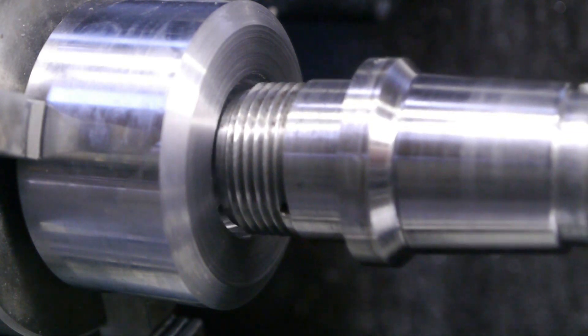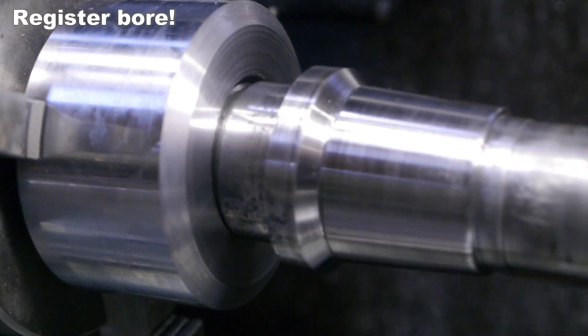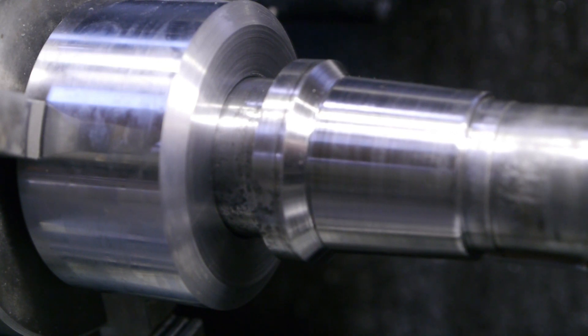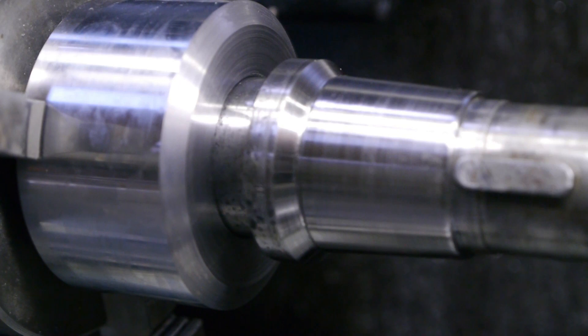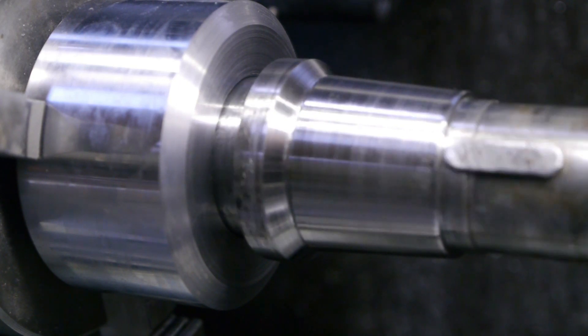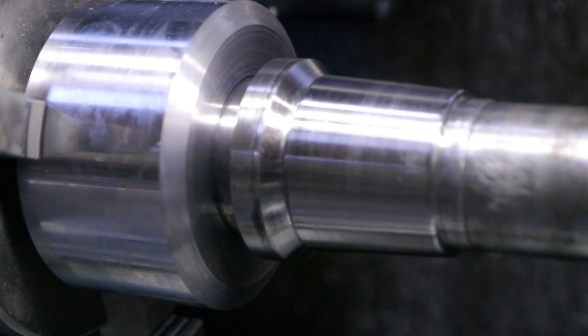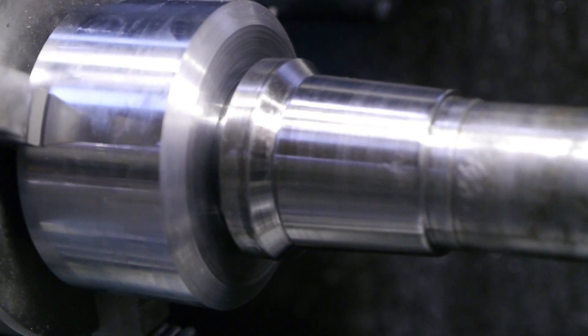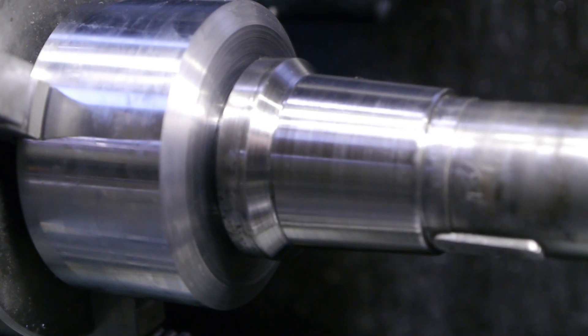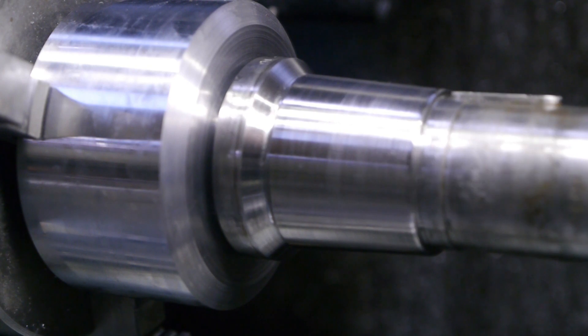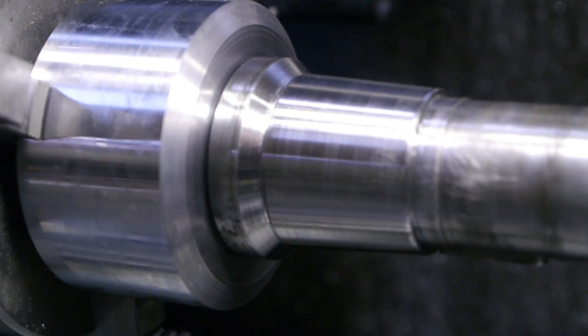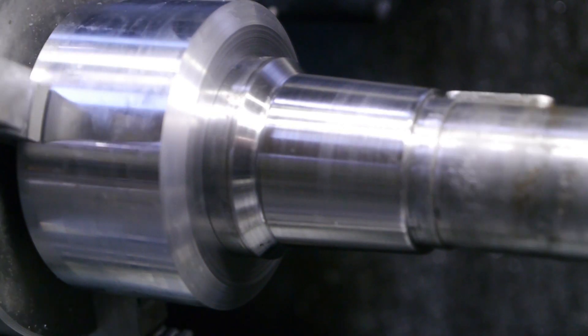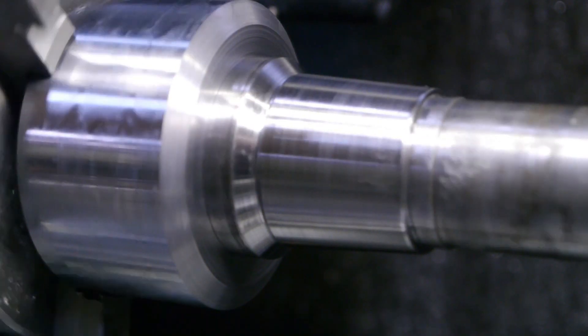I spent maybe 10 minutes polishing that spindle. Let's see what happens. I'm going to use the tailstock again to line it up. Pretty loose. It's getting a bit tighter.